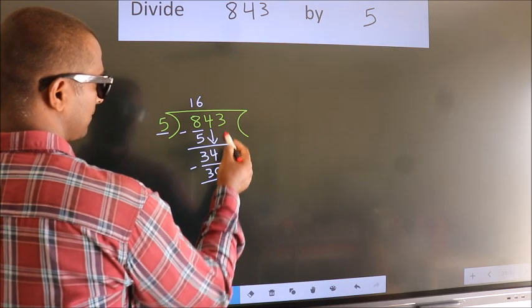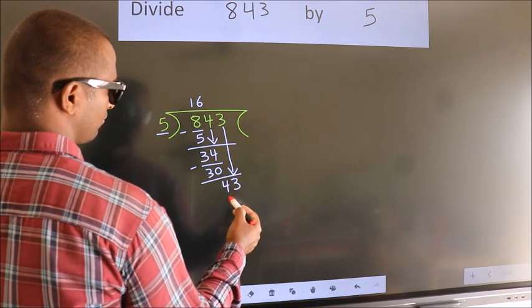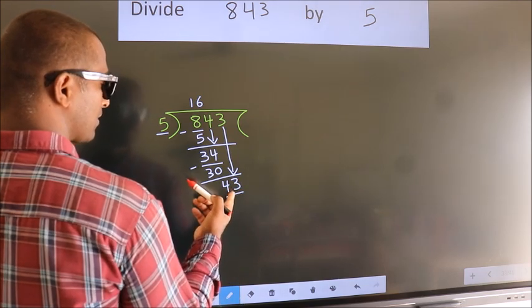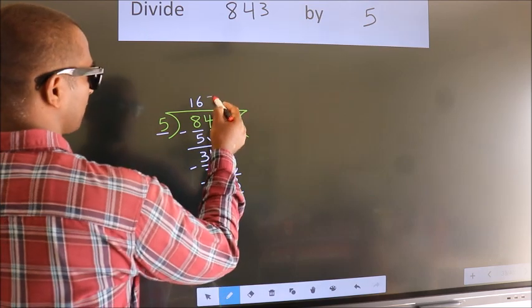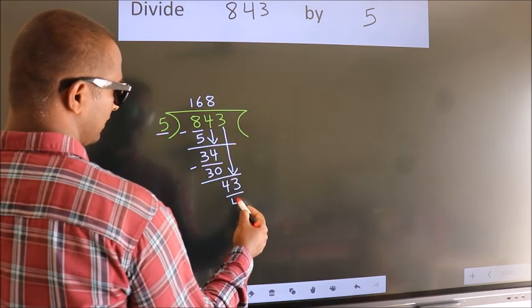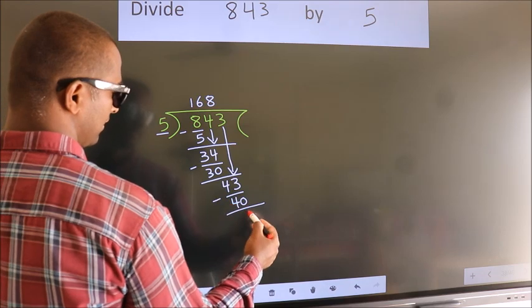After this, bring down the beside number. So, 3 down. So, 43. A number close to 43 in the 5 table is 5×8=40. Now, we subtract. We get 3.